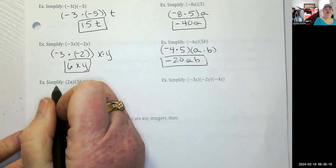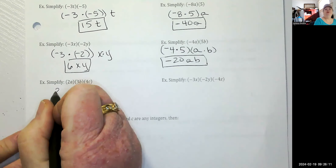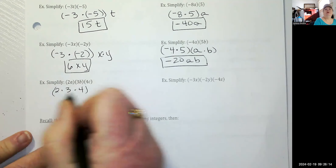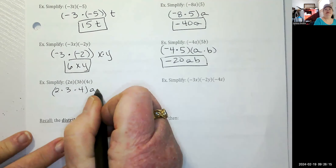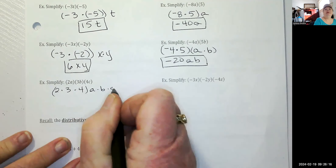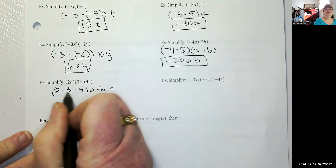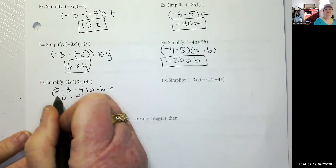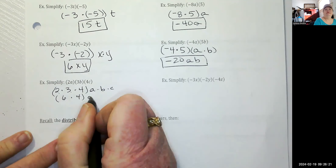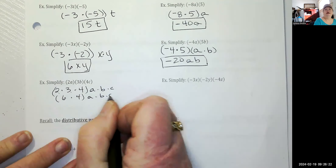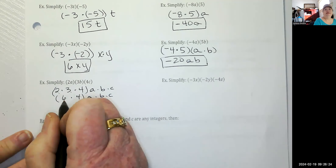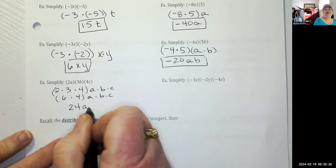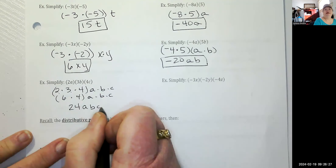Now we've got three variables: two times three times four, then A times B times C. Two times three is six, six times four is 24, and I'm just bringing down the ABC. So the answer is 24ABC.